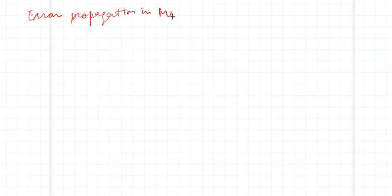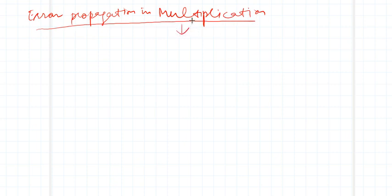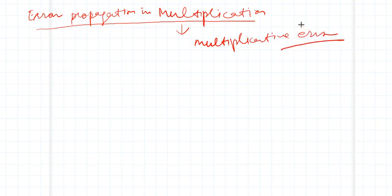Next is error propagation in multiplication. It is similar to what we discussed in the case of multiplicative error, so I am not going to talk about that in detail.